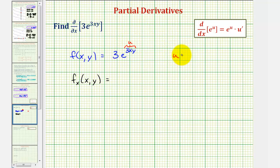So if we let u equal three xy, then u prime would be the derivative of three xy with respect to x, treating y as a constant, so u prime would be three y.